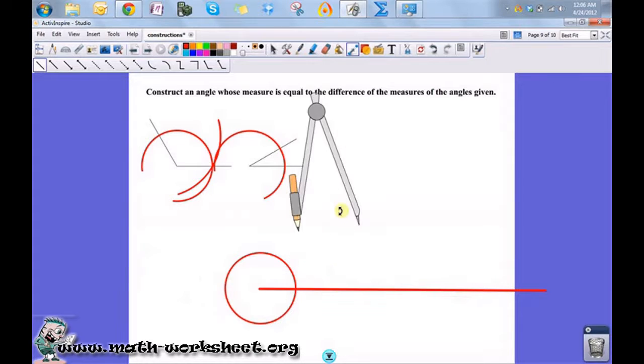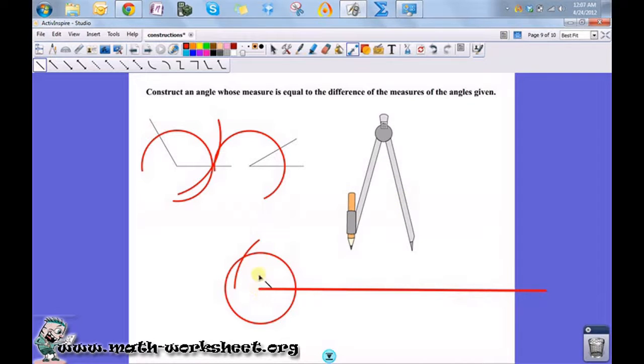So now I'm going to do that over at this point here. Do that same radius. So if I were to draw a ray from here to here, that would be this angle.